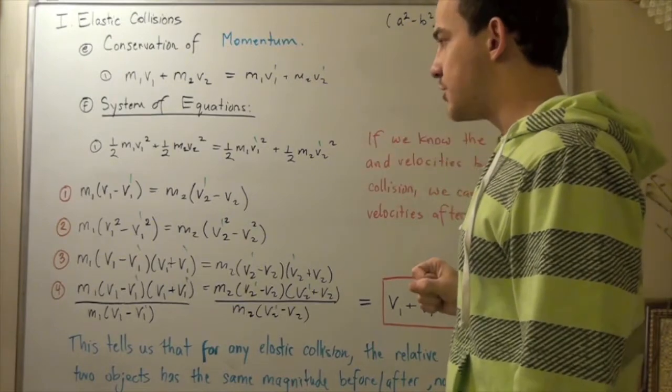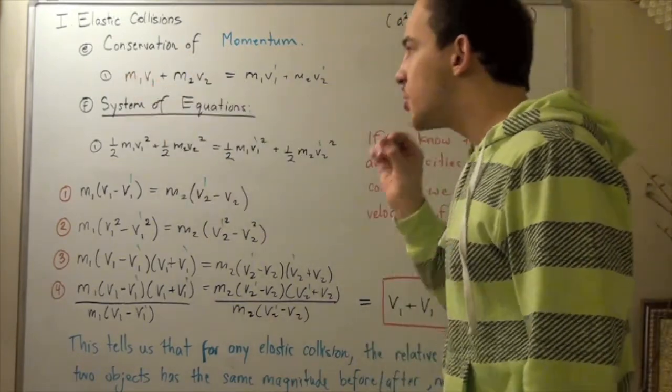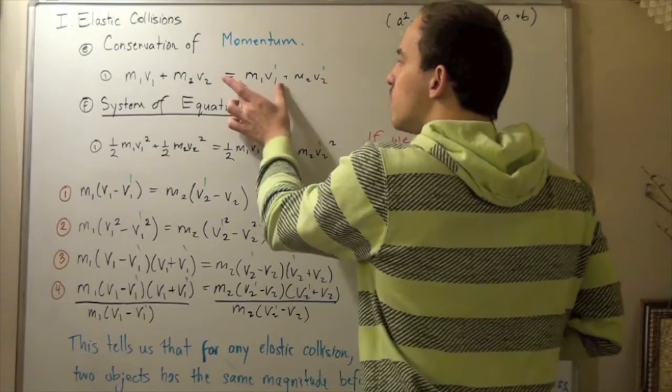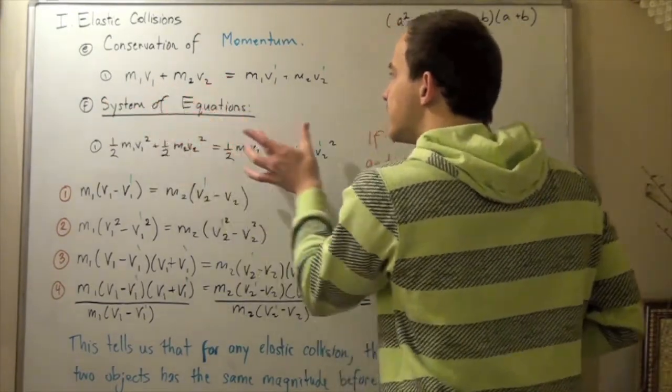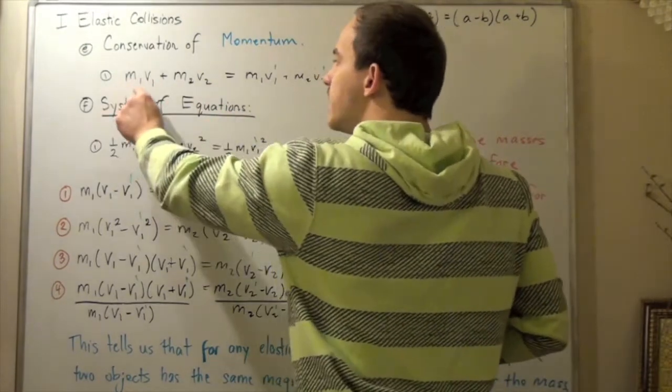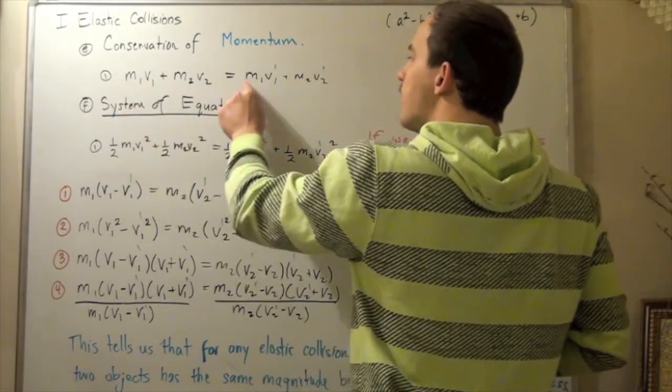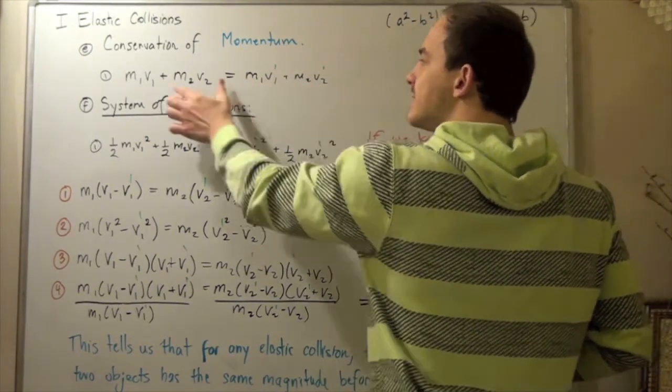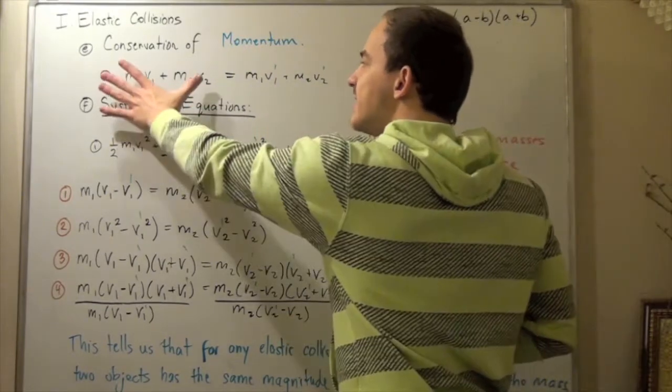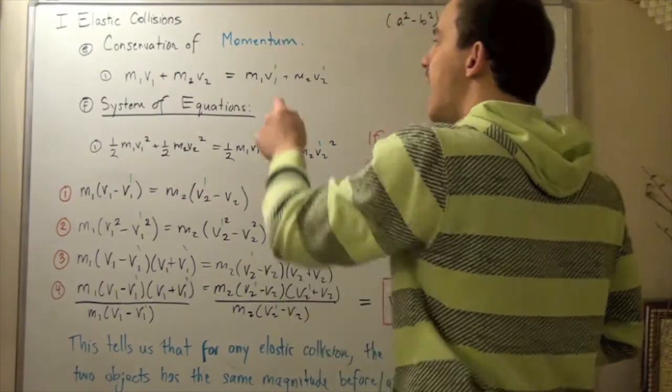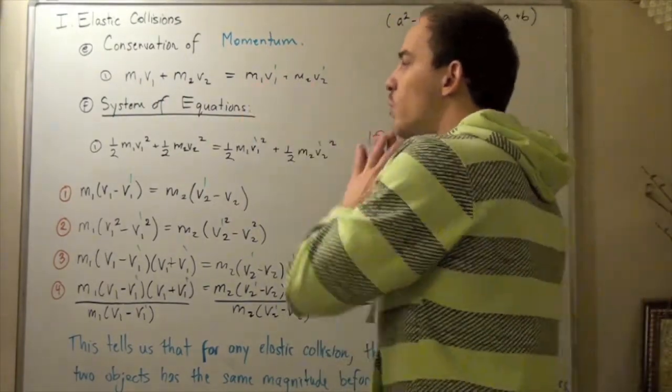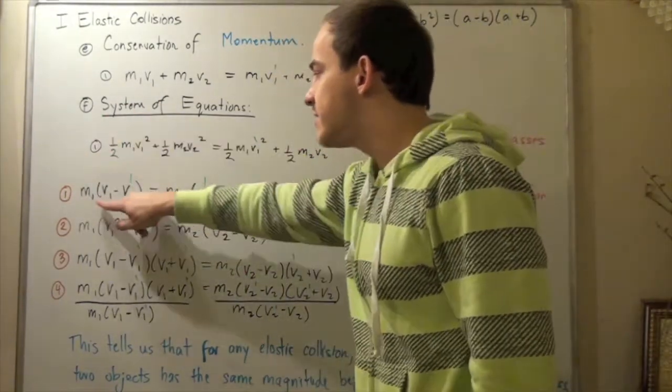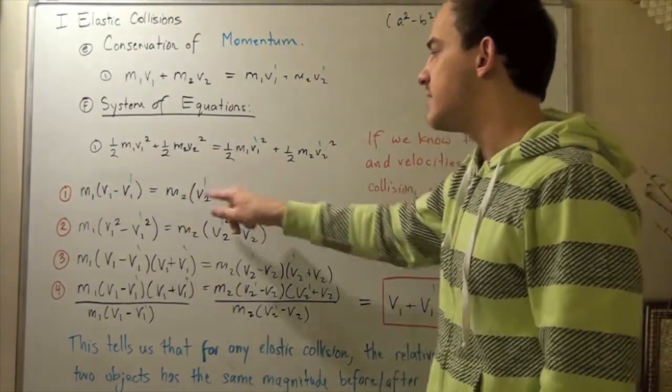We begin with these two equations. Let's take this equation and rearrange it. Let's bring all the m₁ to one side and all the m₂s on the other side. We have m₁(v₁ - v₁') equals m₂(v₂' - v₂). Since this side both terms have an m₁ and this side both terms have an m₂, we can take those terms out in the following way.